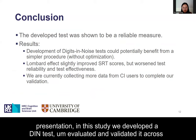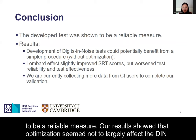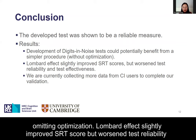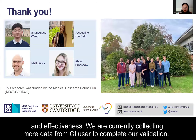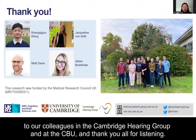To conclude, in this study we developed a DIN test evaluated and validated across different testing conditions and subject categories. The developed test was shown to be a reliable measure. Our results showed that optimization seemed not to largely affect the DIN outcome, and future development of DIN tests could potentially benefit from a simpler procedure omitting optimization. Lombard effect slightly improved SRT score but worsened test reliability and effectiveness. We are currently collecting more data from CI users to complete our validation. I would like to thank the Medical Research Council UK for funding this project, our colleagues at the Cambridge Hearing Group and at the CBU, and thank you all for listening.